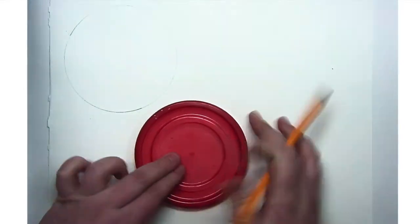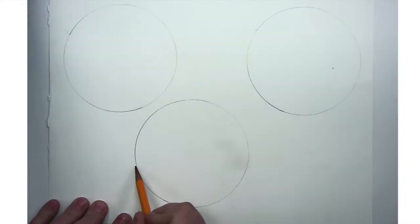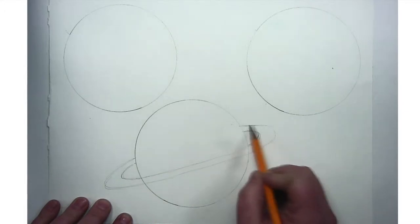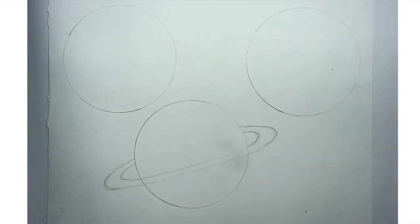So now for my planets, I'm using a lid here to trace a perfect circle. You can free draw it or use some other sort of template. And then on one of these planets, I decided I wanted to add some rings. So I just drew in the rings there.